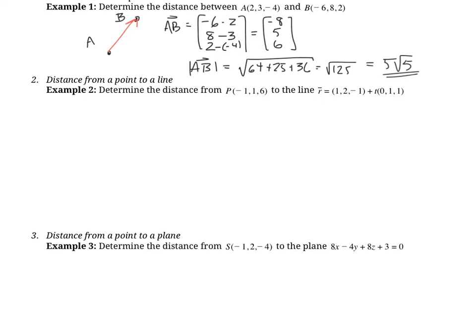The next one is the distance between a point and a line. The most important thing here: always draw a sketch. So we have our line and we have a point, assuming this is happening in three dimensions. The point is called P, and our line has some point — I'll call it A — and a direction vector. The question is how do we find the distance between the point and the line?